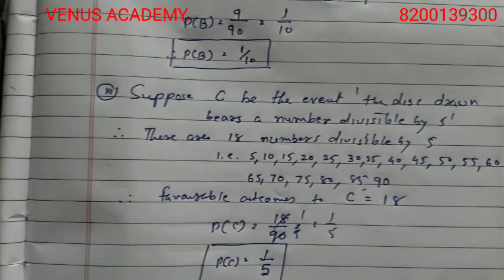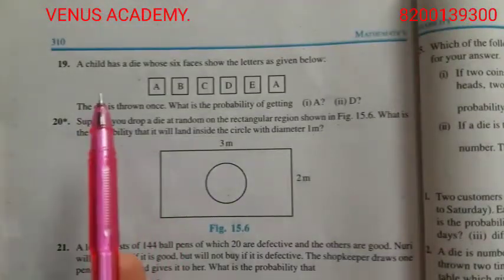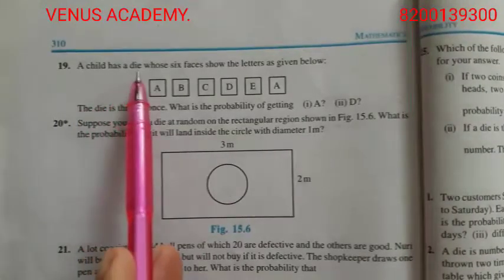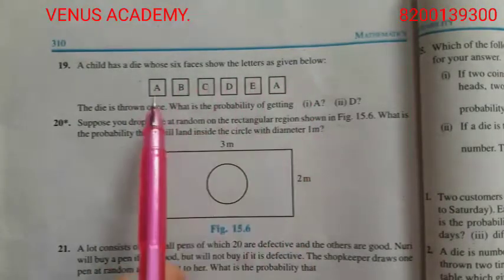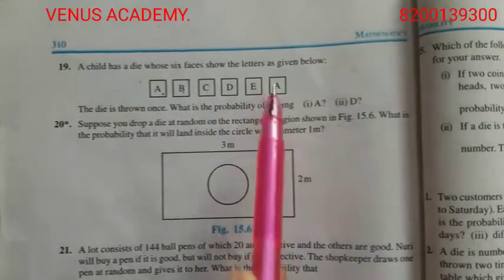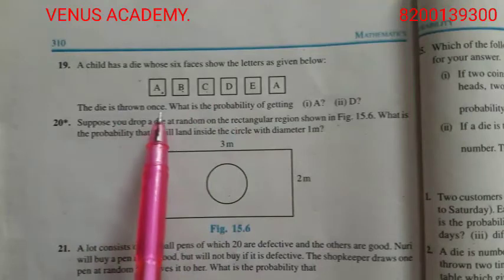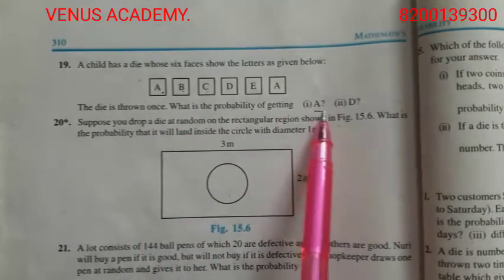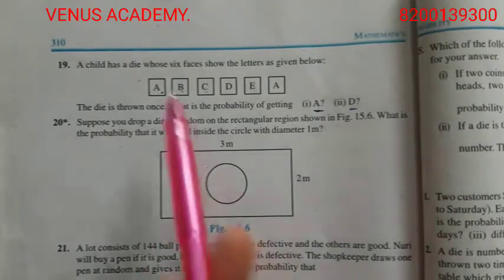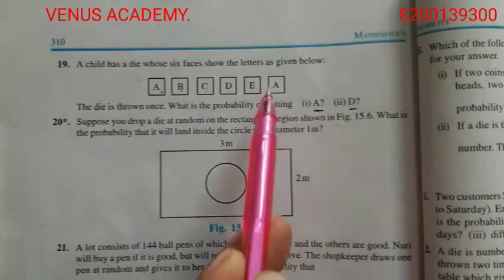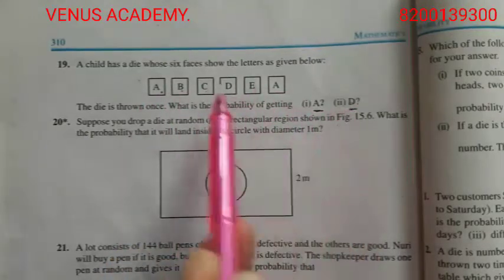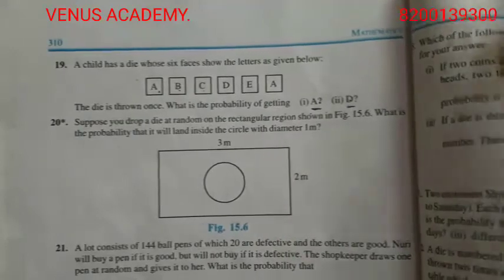So that was question number 18 — very easy. The numbers divisible by 5 and the perfect squares, you should know these. Now question number 19: A child has a die whose six faces show the letters A, B, C, D, E, and A. The die is thrown once — find the probability of getting A and of getting D.